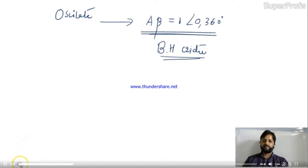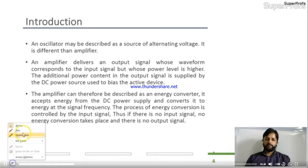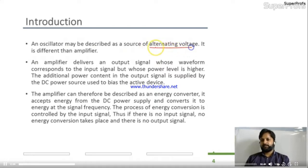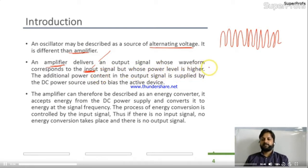Now we will see the theory. An oscillator may be described as a source of alternating voltage — continuously changing its value, which we call oscillation. It is different from an amplifier: an amplifier delivers an output signal whose waveform corresponds to the input signal but whose power level is higher.